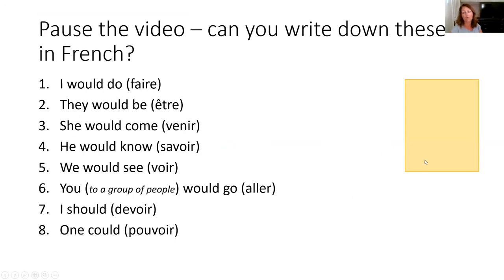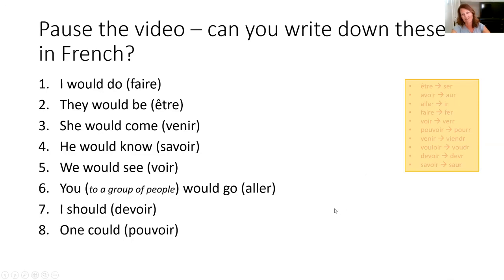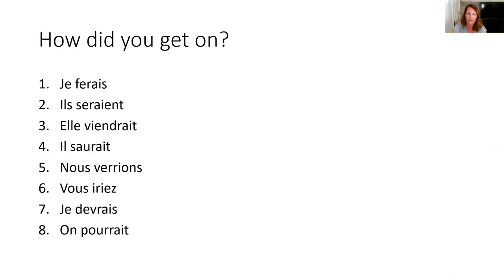Please pause the video and have a go at this translation practice using what we've just covered, with the irregular stems as a reminder. Here are the answers: je ferai, il serait, elle viendrait, il serait, nous verrions, vous iriez, je devrais, and on pourrait.